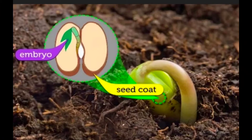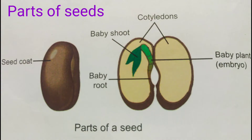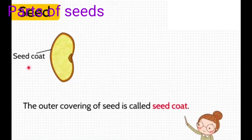First, we will learn the structure of a seed. A seed consists of the following parts: seed coat, baby shoot, cotyledons, baby root, baby plant, and embryo. The thick outer covering of a seed is called the seed coat.